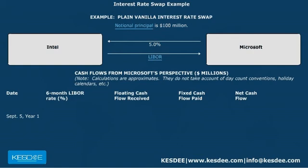Under this swap agreement, the first exchange of payments takes place on September 5 of year 1, 6 months after the start of the contract. Microsoft pays Intel interest at 5% on $100 million for 6 months, or $2.5 million.